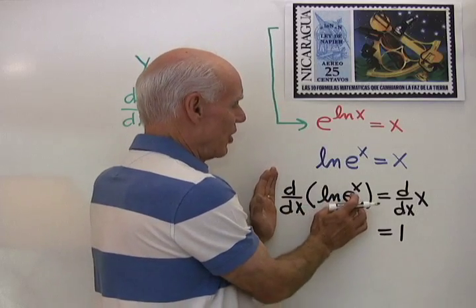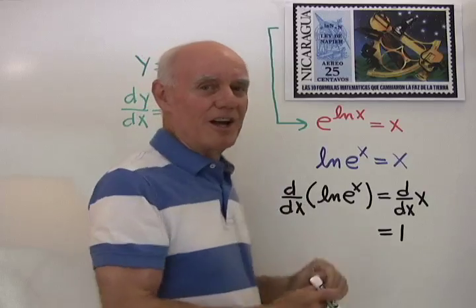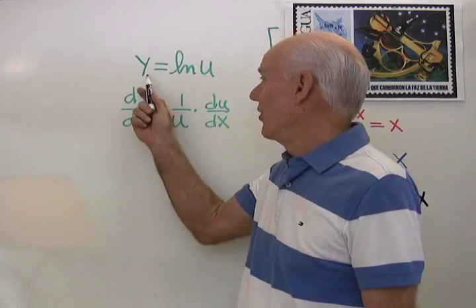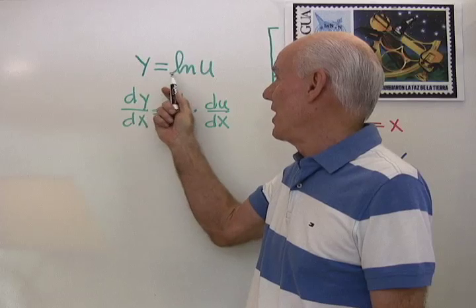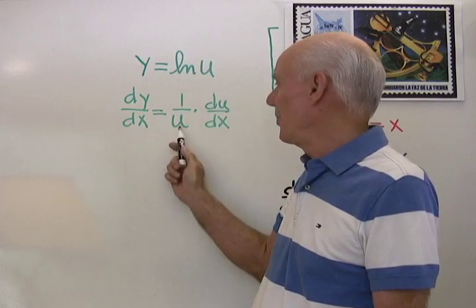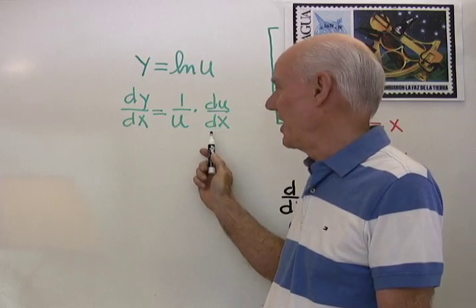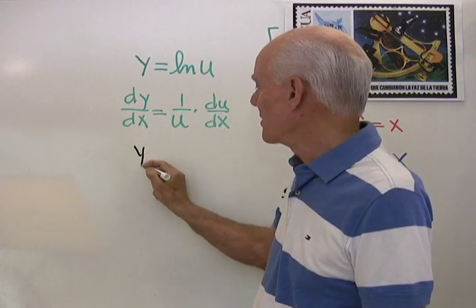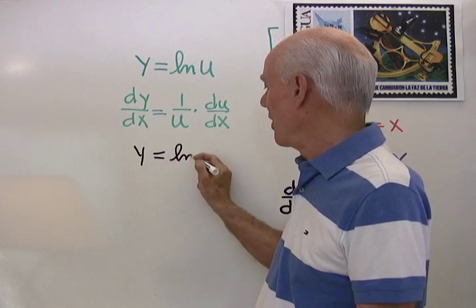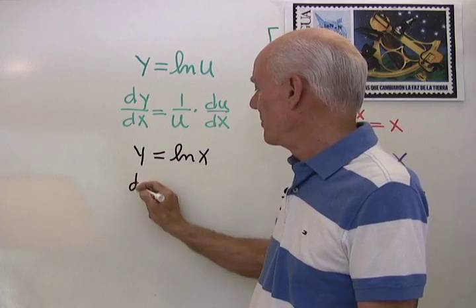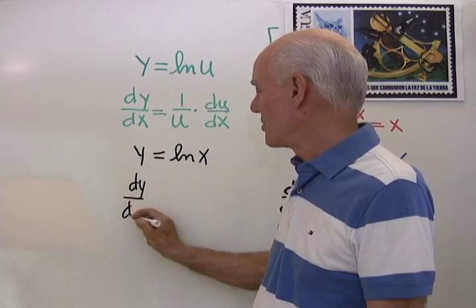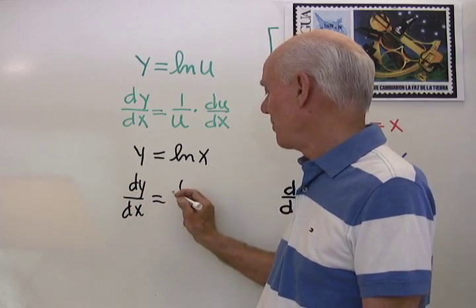How about the derivative of natural log e to the x? Well, remember our formula for the derivative of y equal natural log u is 1 over u times the derivative of u with respect to x. If I have just y is equal to natural log x, then the derivative of y with respect to x is just 1 over x.